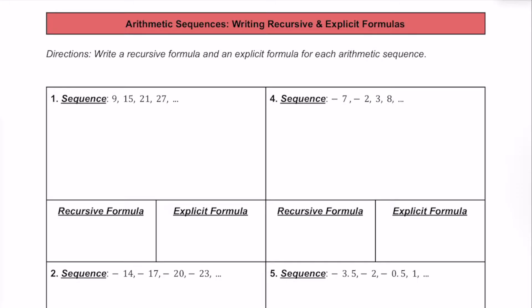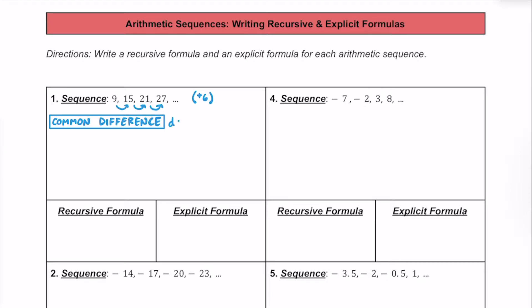For number one, we have the sequence of 9, 15, 21, and 27. The first thing we're going to want to do is verify that the distance between each of these numbers in the sequence is the same each time so that we know it is an arithmetic sequence. It looks like the pattern here is that we're adding 6 for each number in the sequence, so it is an arithmetic sequence. Since we add 6 each time, the common difference, or d, is going to be equal to positive 6.